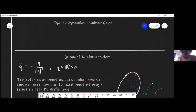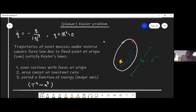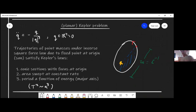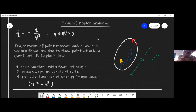I wanted to start by quickly reminding what I mean by the Kepler problem. We'll talk about the planar Kepler problem. We consider trajectories of a point mass in the plane subject to Newton's inverse square law from a fixed source, like the sun. Choosing units so that the constant of proportionality is one, this is the second order ODE in the plane.